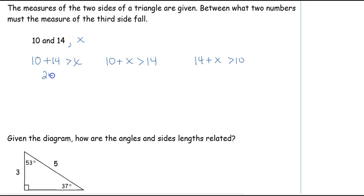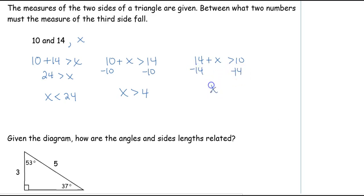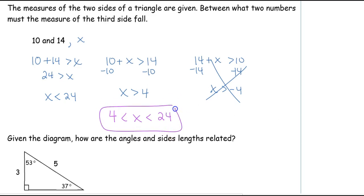So 10 + 14 = 24 is greater than x, meaning x has to be less than 24. Moving the 10 over, x has to be greater than 4. Moving the 14 over, x has to be greater than negative 4 — but side lengths can't be negative, so that's automatically satisfied. Therefore x has to be less than 24 and greater than 4. The possible range of values is between 4 and 24 — not including 4 or 24 — so it could be 6, 10, 13, or 20. Any number between 4 and 24 will create a triangle.